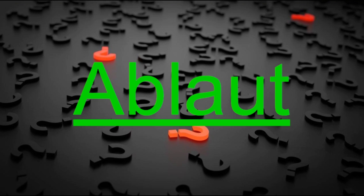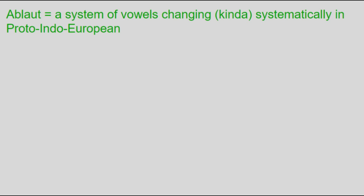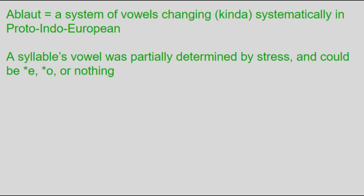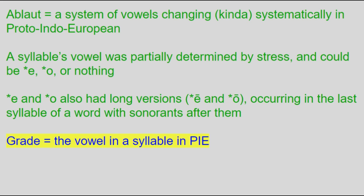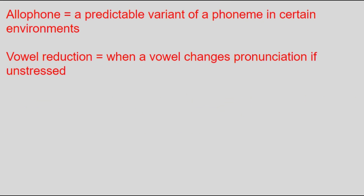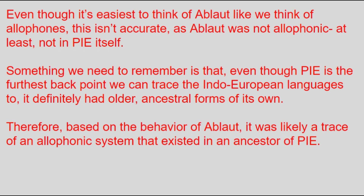So first off, what exactly was ablaut? Basically, it was a system in Proto-Indo-European where a vowel could be e, o, or nothing depending on where the stress was in the word, and it would also get lengthened if it was in the last syllable of a word with a sonorant after it and no additional suffix. The vowel found in a particular syllable is known to linguists as its grade. It'll probably be easiest to think about it as an allophonic system somewhat like vowel reduction — and in fact, while ablaut certainly wasn't allophonic in PIE, it probably had been at some point earlier.